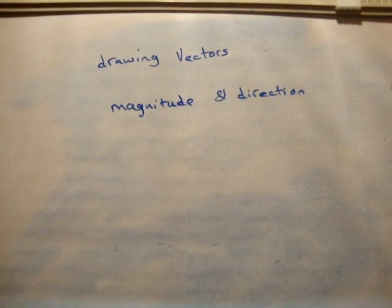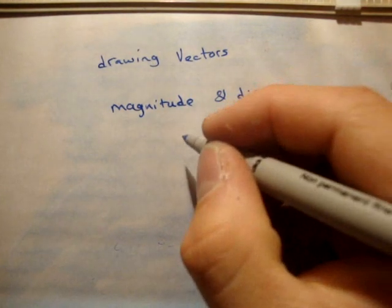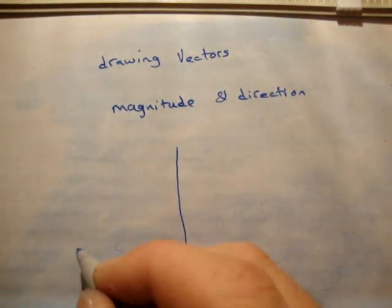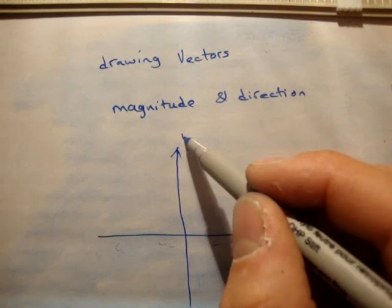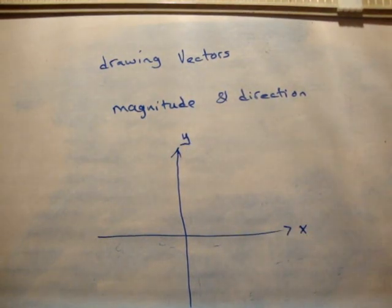So magnitude, it's got a number associated with it, a length, a weight or whatever, and a direction where it's going a particular way. So let's draw my y-axis and let's draw my x-axis, which together make my xy-plane or my Cartesian plane.